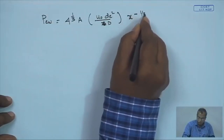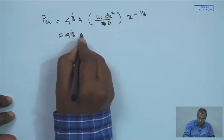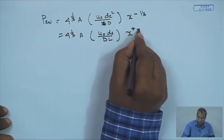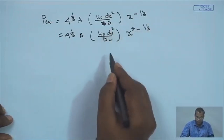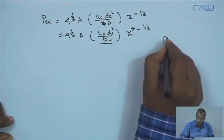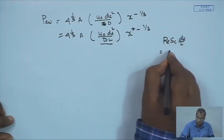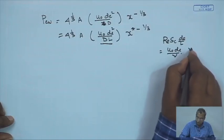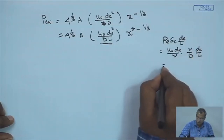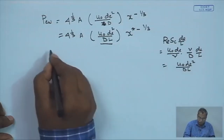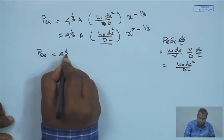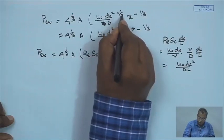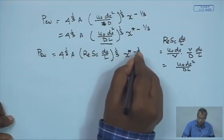Putting this in non-dimensional form: P_w = 4 to the power 1/3 times A·u₀·d²/(d·L), where L is the channel length, times x* to the power −1/3. This number is again a non-dimensional number — Reynolds times Schmidt times d_e/L. Opening it up: u₀·d/ν times ν/d times d/L gives u₀·d²/(d·L). So P_w becomes 4 to the power 1/3 times A times Re·Sc·(d_e/L) to the power 1/3 times x* to the power −1/3.